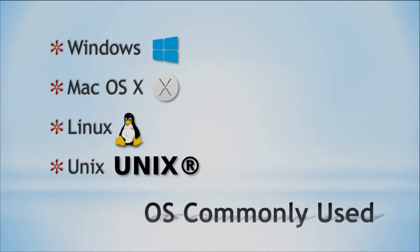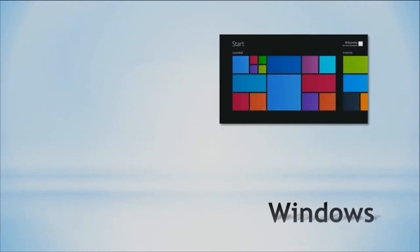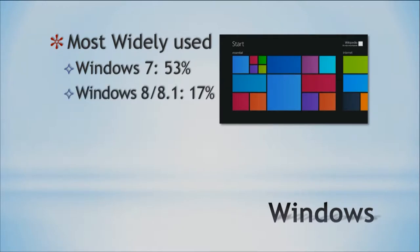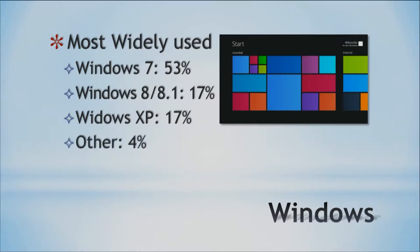Let's start looking at Windows right away. Windows is provided by Microsoft and is probably the most widely used operating system, with several different versions out there. Windows 7 has about 53 percent market share, Windows 8 is about 17 percent, and Windows XP — even though it's no longer supported by Microsoft — still accounts for about 17 percent of systems on the internet. Other versions of Windows come to about 4 percent, adding up to roughly 91 percent of all systems being Windows-based.